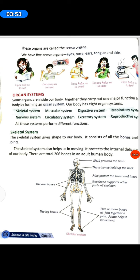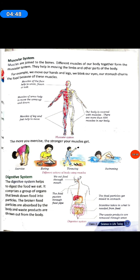Skeletal System. The skeletal system gives shape to our body. It consists of all the bones and joints. The skeletal system also helps us in moving. It protects the internal delicate parts of our body. There are 206 bones in an adult human body. The skull protects the brain. Neck bones hold up the neck. Ribs protect the heart and lungs. The backbone supports other parts of the skeleton. Two or more bones meet at a joint. Joints help in movement.